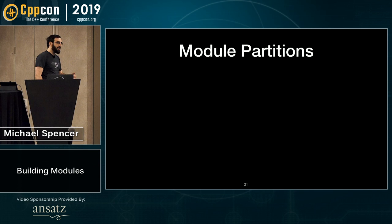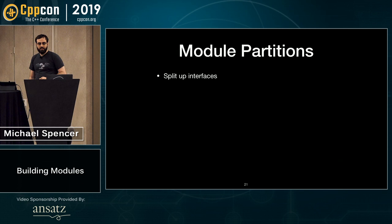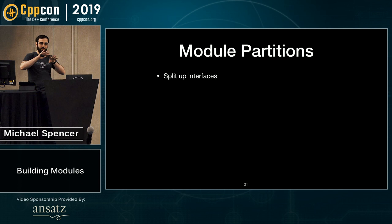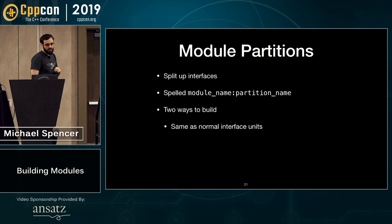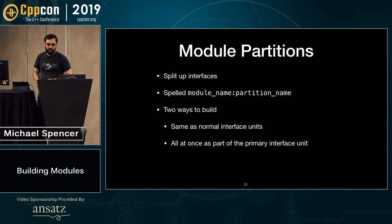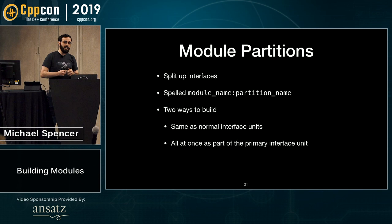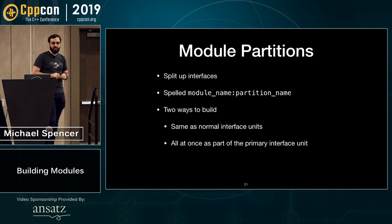Additionally, there are module partitions. You can think of these as module interface units — they have mostly the same properties when building. They allow you to split up an interface, much like splitting a big header into detail headers. They're spelled 'module name : partition name'. There are actually two ways to build them: the same as a normal interface unit, or all at once as part of the primary interface unit. Clang actually does the latter for its own Clang submodules, building everything at once and playing some visibility games.